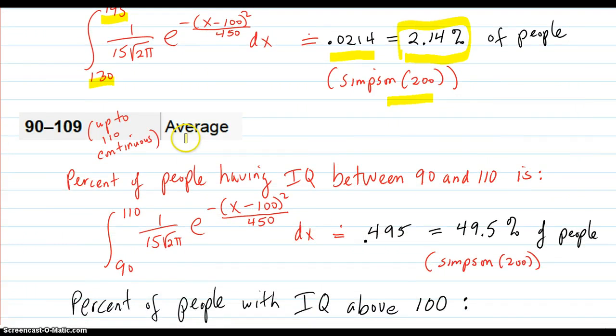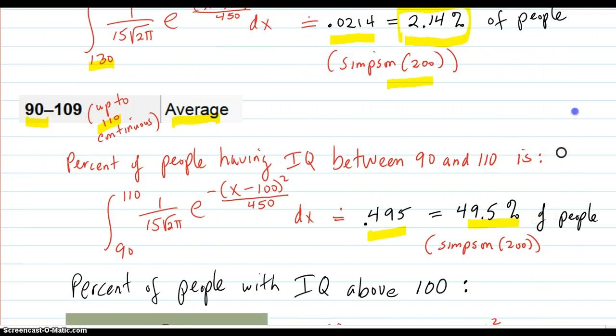What about an average range? People around the center from 90 to 110. So we run that integral and we get 0.495, 49.5% of the people have an IQ in that average range. So that's about half the people.